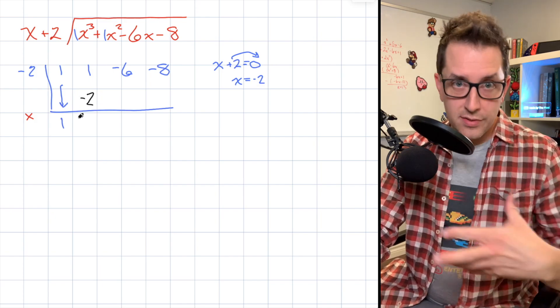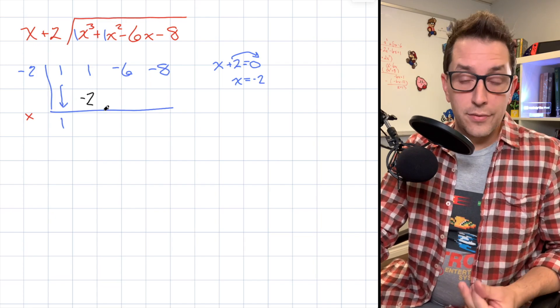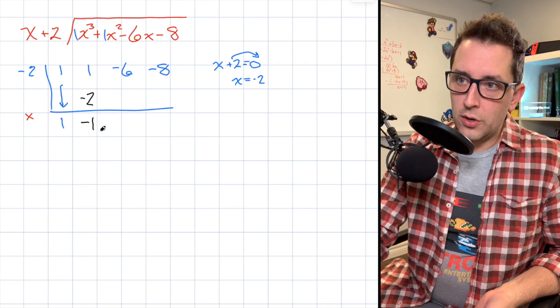Now the next part of this synthetic division algorithm tells me to take those two numbers and add them together. 1 plus -2, that's just going to be -1, and I'm going to write the result right down here.